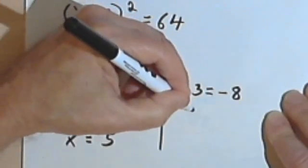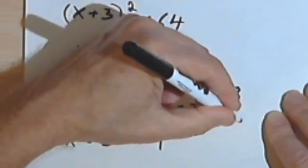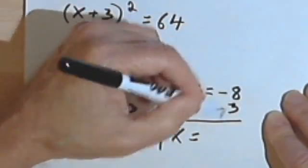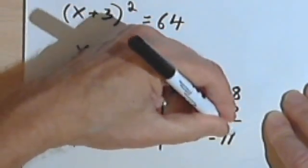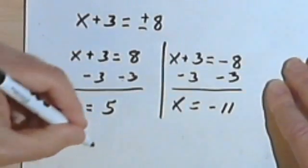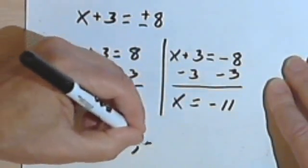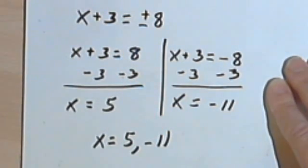In this equation I'm once again subtracting 3 from both sides. So I've got x equals negative 8 minus 3 is negative 11. So my answers are going to be x equals 5 or negative 11.